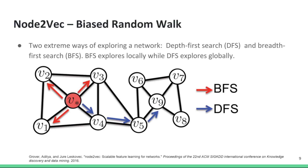Now we introduce Node2vec, which is an improvement to DeepWalk. Instead of using an unbiased random walk like in the DeepWalk algorithm, Node2vec uses a biased random walk. There are two extreme ways of exploring a network: breadth-first search and depth-first search. Starting at the node v-star, a breadth-first search would first explore all of its neighboring nodes. A depth-first search would tend to move far away from v-star. A breadth-first search can be used to explore the local neighborhood of a node, and a depth-first search could be used to explore the graph globally.